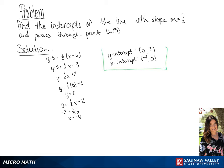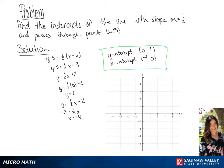So our x-intercept is negative 4, 0. Now we're going to graph this using negative 4, 0 and 0, 2 to graph our line.